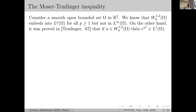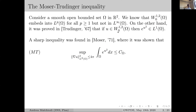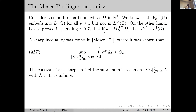Four years later, in 1971, Moser proved the sharp inequality: whenever the L² norm of the gradient of u is bounded by 4π, the integral of e^{u²} is bounded by a constant depending only on Ω. This upper bound of 4π is sharp — if you take the supremum over functions whose gradient L² norm squared is less than λ for λ greater than 4π, then the supremum becomes infinite.